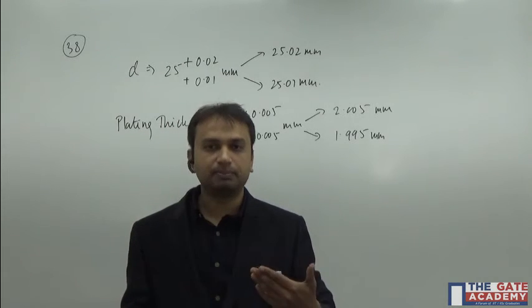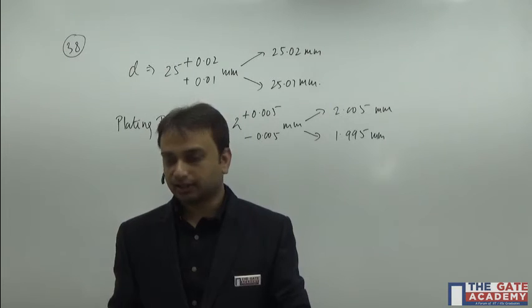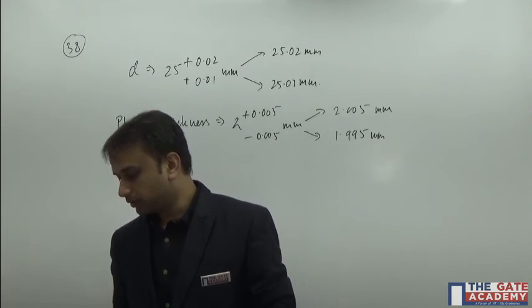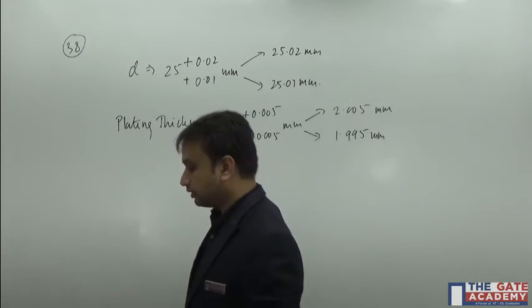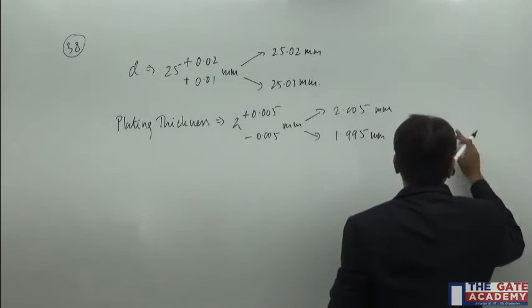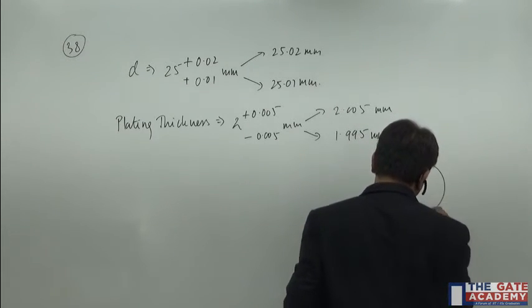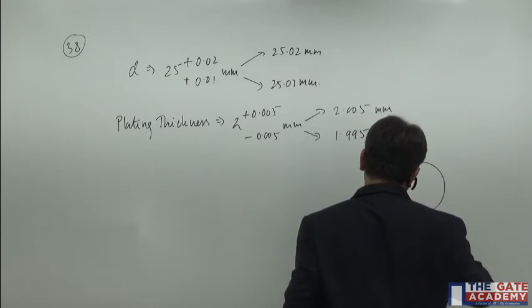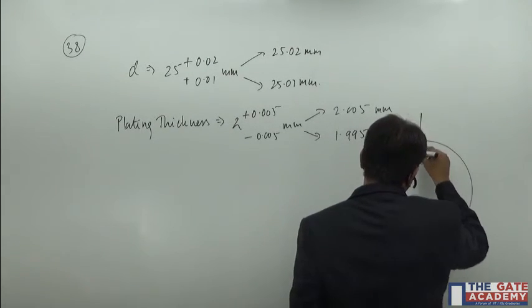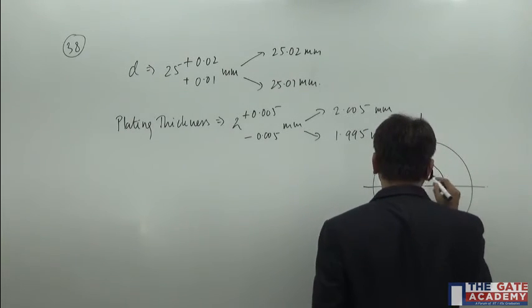But obviously, because of the plating thickness, its diameter is going to increase a little bit. And so, the go-ring gauge is going to be, let me show you with the help of a small diagram. Suppose this is the shaft, and this is the plating thickness.